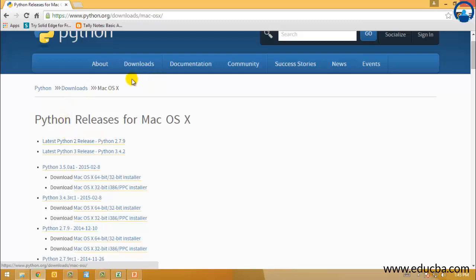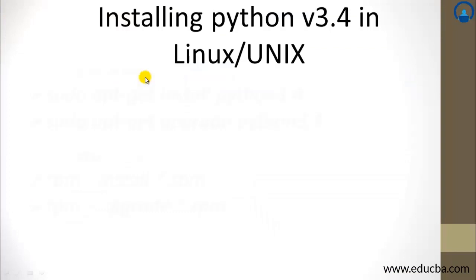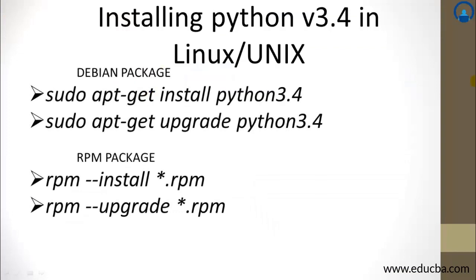If you're using Debian in Linux, you need to write 'apt', which stands for Application, hyphen 'get install'. If you have a Debian package and are using any Linux distribution other than Kali Linux, then you need to put this in your terminal: sudo apt-get install python3.4. This will get you the Python application in your environment.